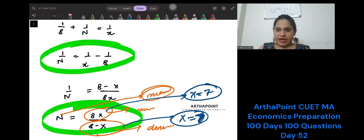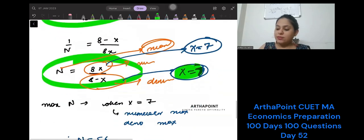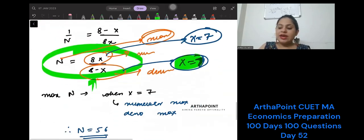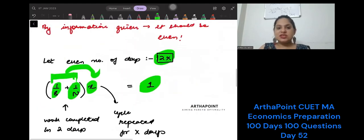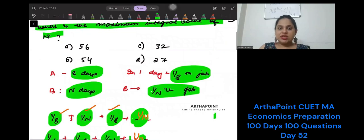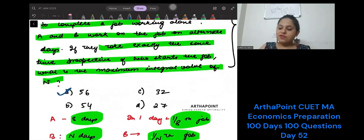X cannot take 8. If X takes 8, it will be 0 in the denominator—it cannot be 0. X has to only take integer values, so X can take the value 7. 8 - 7 will be 1 in the denominator, 8 × 7 will be 56 in the numerator. So N will be, the value of N will be 56. So in this case, the answer to this question will be 56.